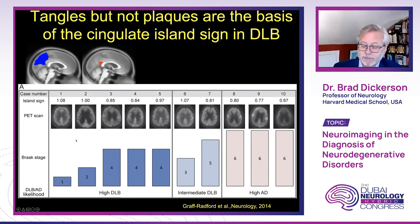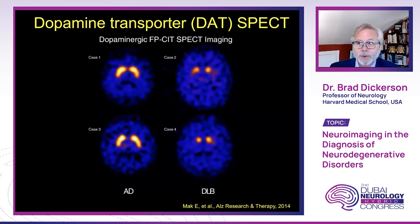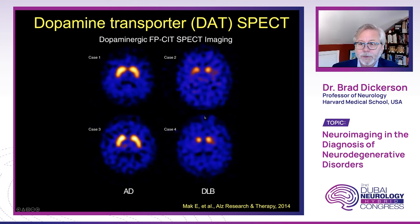Dopamine transporter SPECT imaging is often useful in evaluating patients with Parkinson's disease or dementia with extrapyramidal dysfunction suggestive of Parkinsonism, with reduction of dopamine transporter imaging suggestive of the presence of Lewy body pathology.